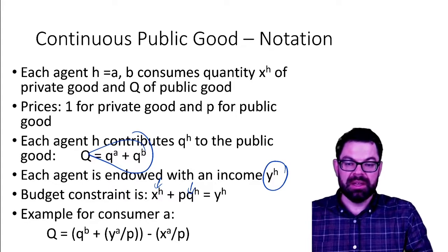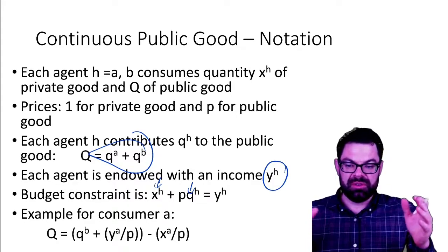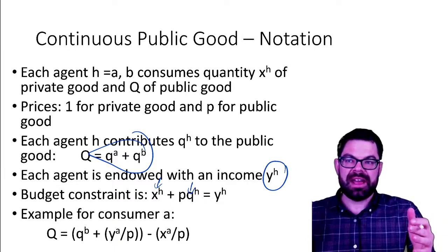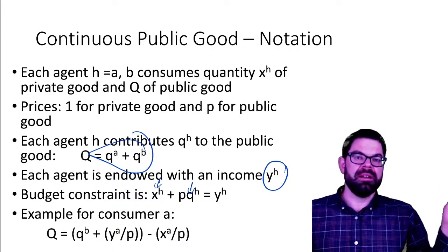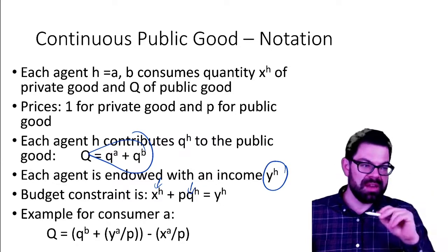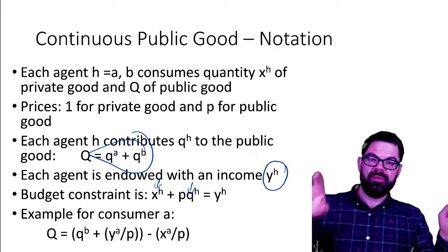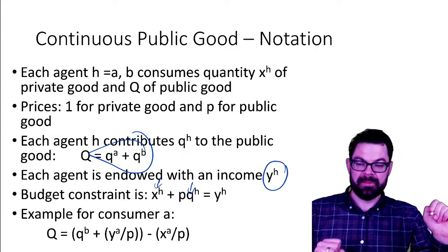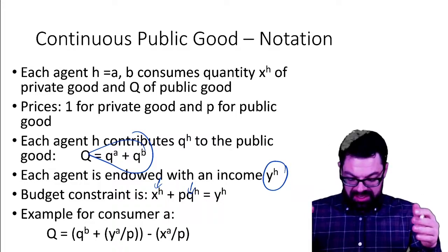What we're going to look at now is the so-called reaction functions. The idea is: what is the reaction of person A conditional on person B's contribution? If person A knows that person B is going to contribute a certain amount, what is the individually optimal amount for person A to contribute? Before we do that, we first have to think about what is person A's demand for the public good.